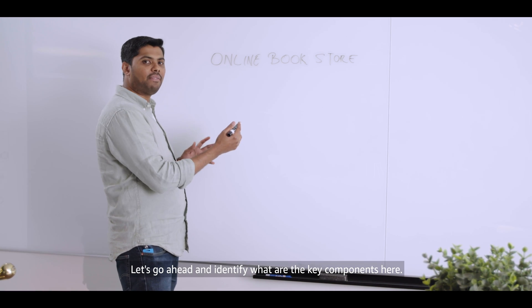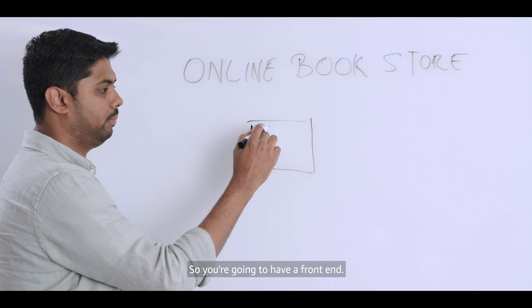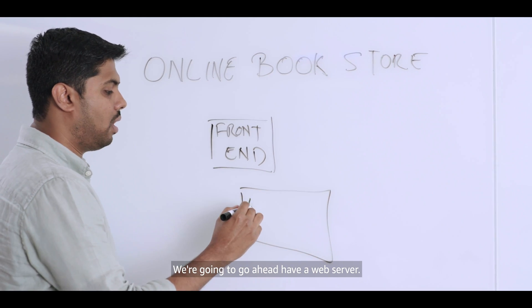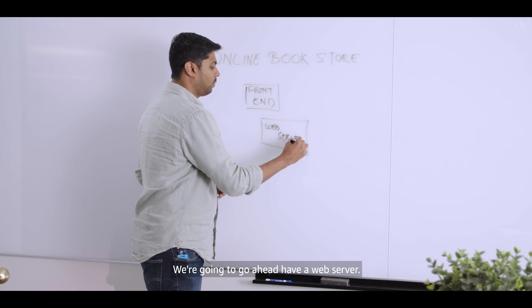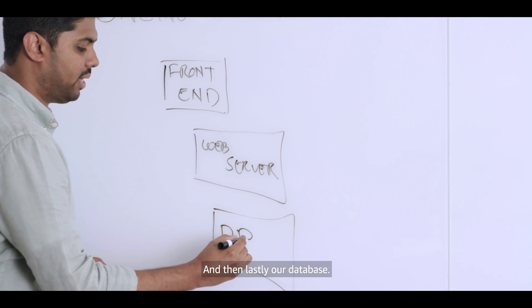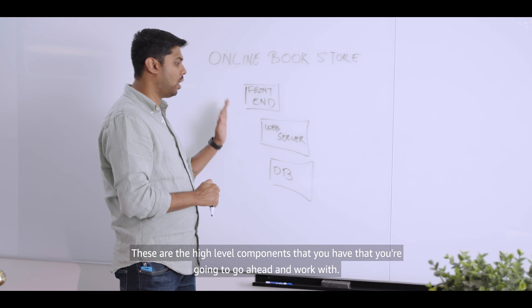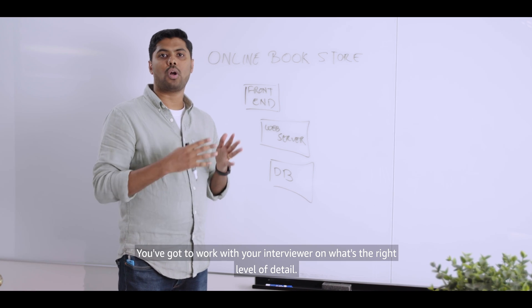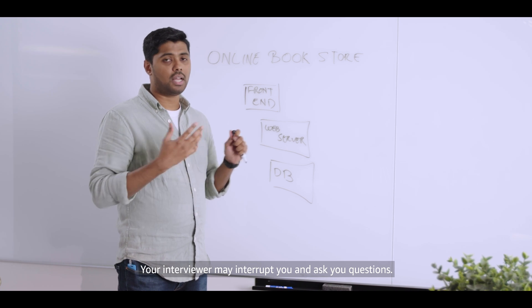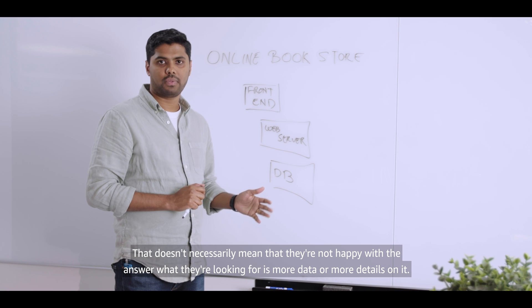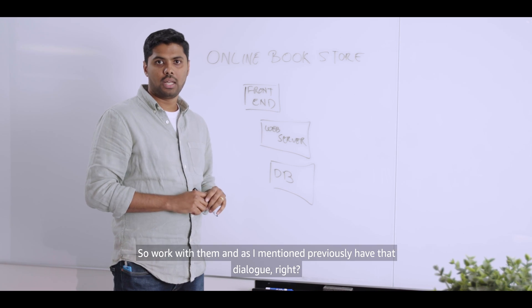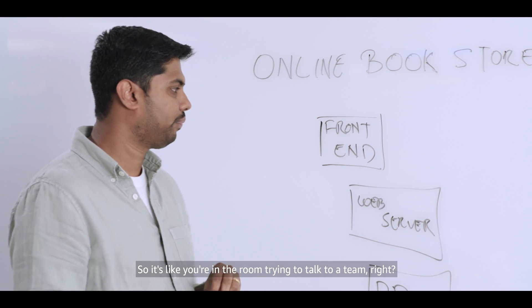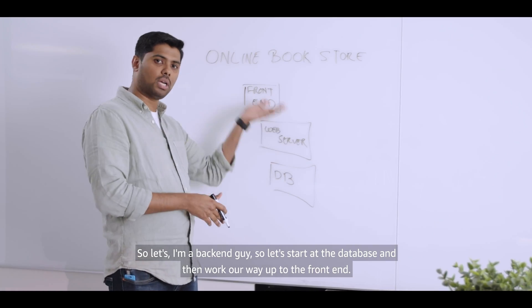Let's get into this and identify the key components. You're going to have a front-end, a web server, and then a database. These are the high-level components you're going to work with. As you go through the process, you'll start going into the details of each one. Work with your interviewer on the right level of detail — if they interrupt and ask questions, they're looking for more data. I'm a back-end person, so let's start with the database and work our way up to the front-end.